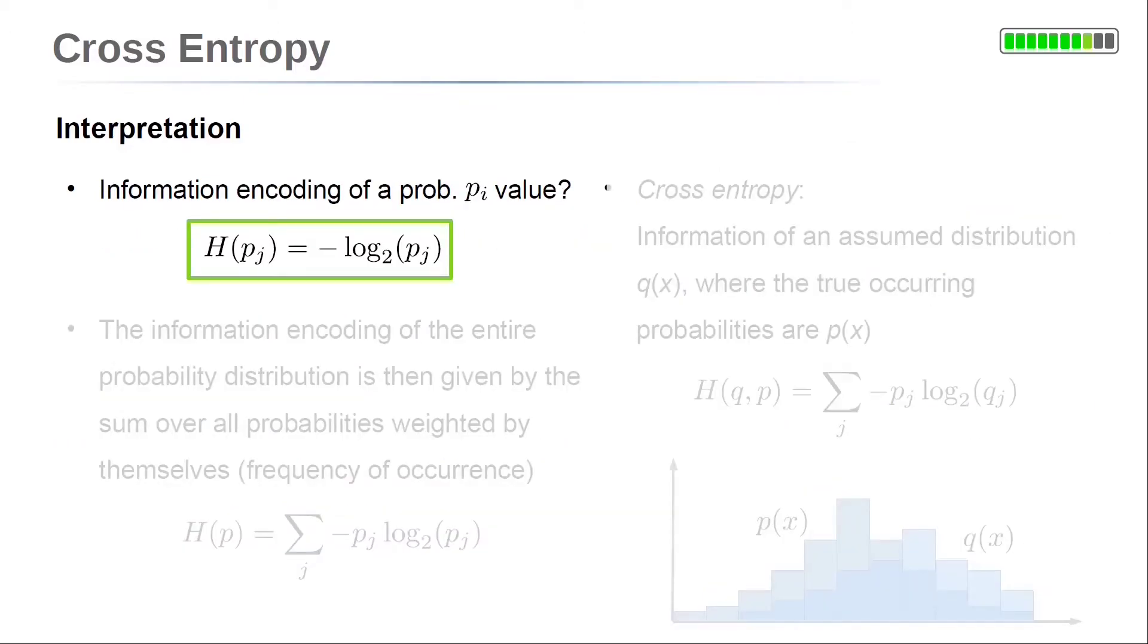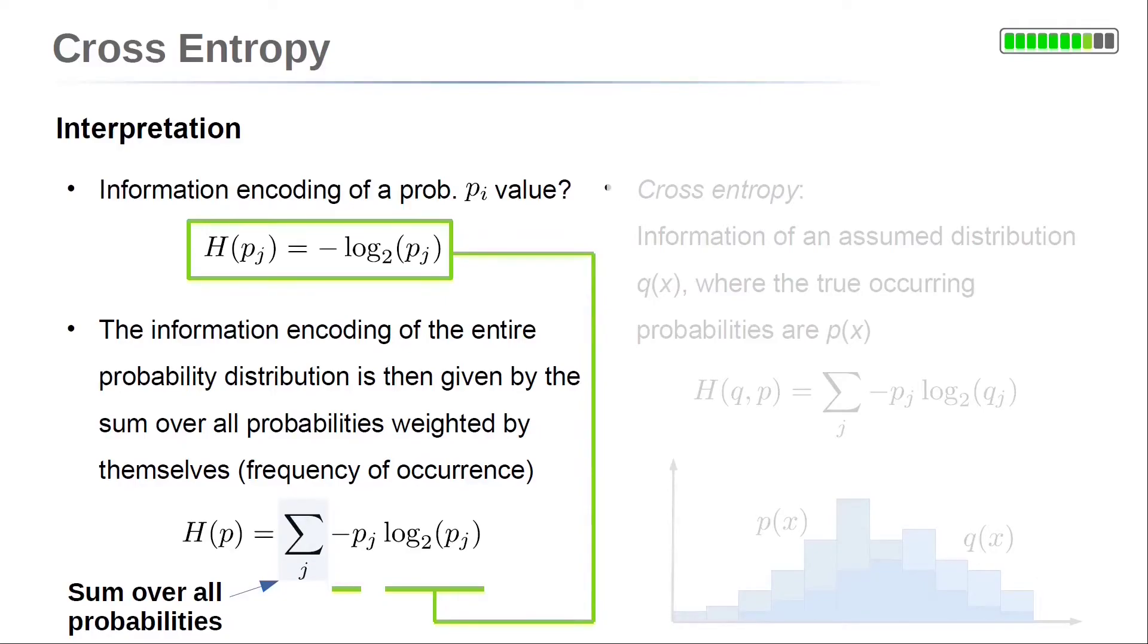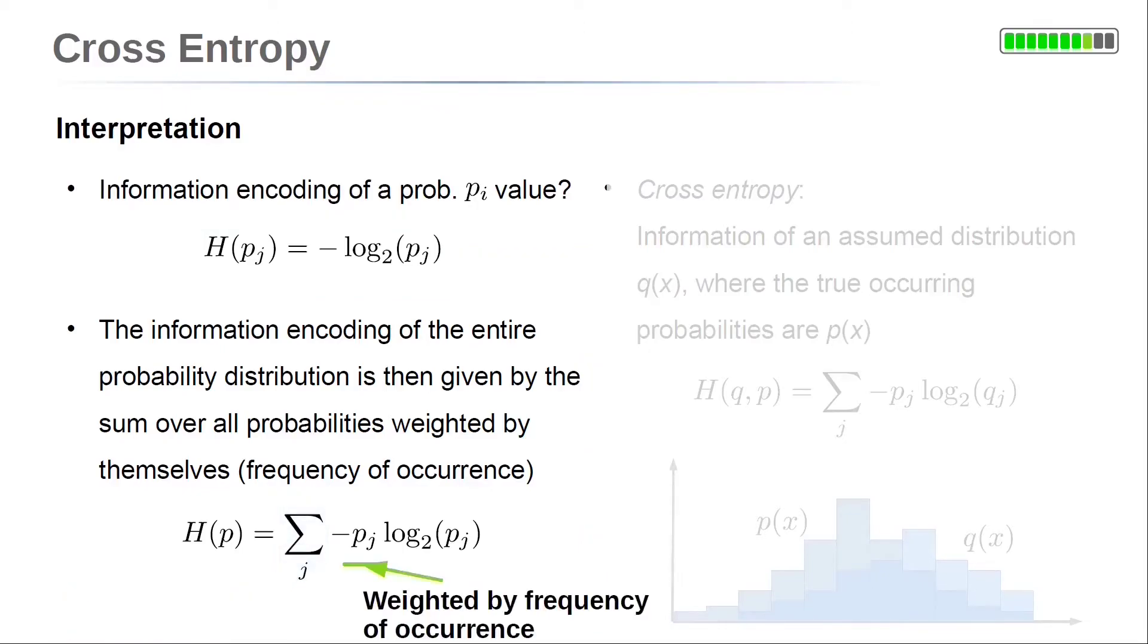To calculate the information encoding of the entire probability distribution, we need to sum over all possible probability values. However, high probability values are more frequent than small probabilities. So, the information encoding of a single probability value is weighted by the probability itself. The entropy measure of the information of the entire probability distribution is h equals the sum over all probabilities of the negative probability times the logarithm of the probability.